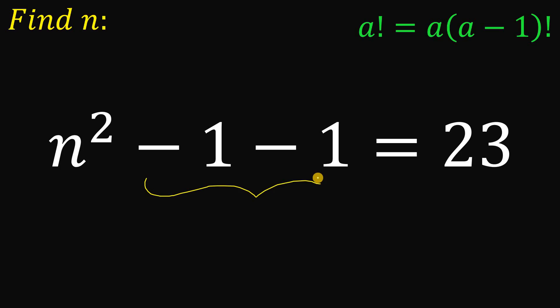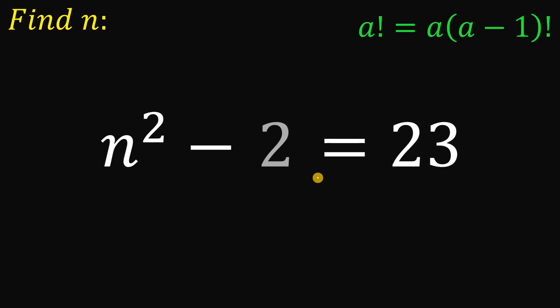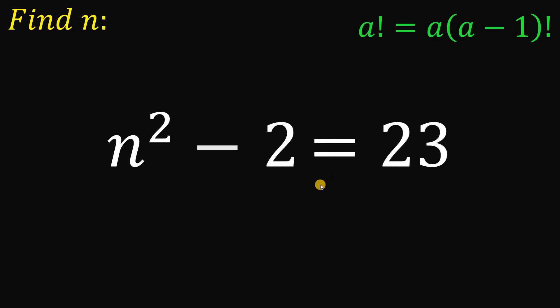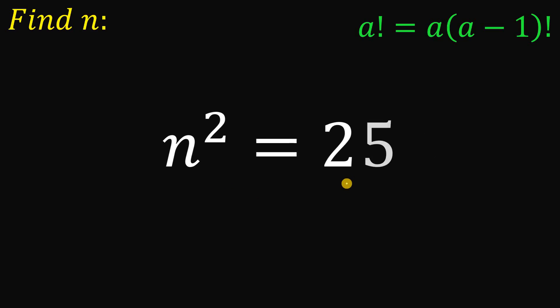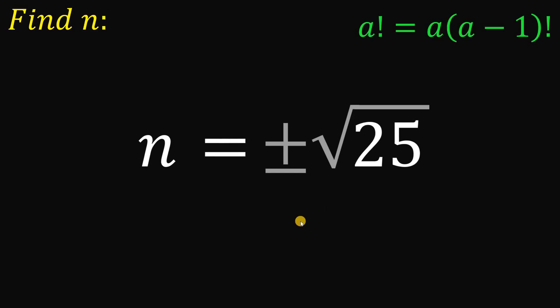Now let's simplify and solve for the value of n. Negative 1 minus 1, this is just negative 2. Add 2 on both sides. 23 plus 2 is just 25. And get the square root. Now to solve for the value of n, let's get the square root on both sides. Take note, we have two possible values here. So positive and negative square root of 25.